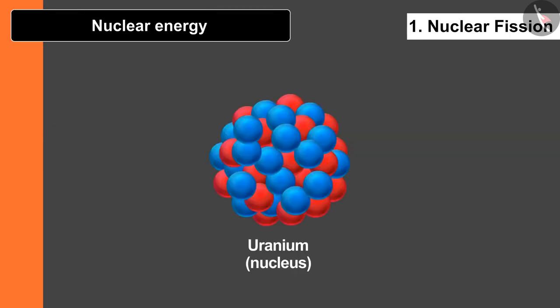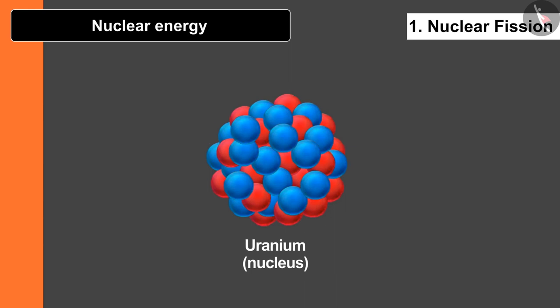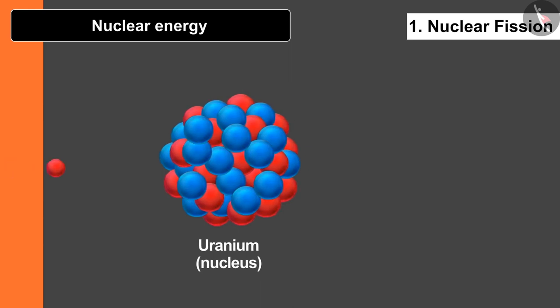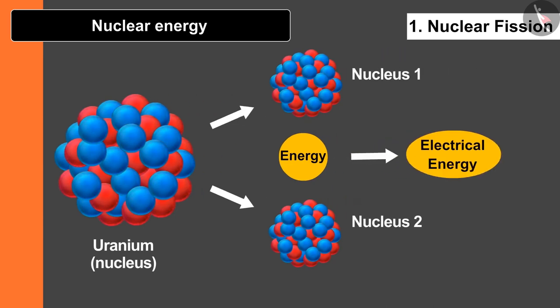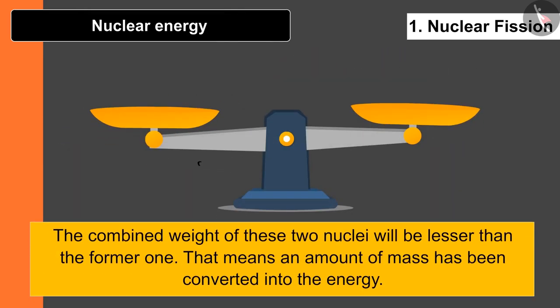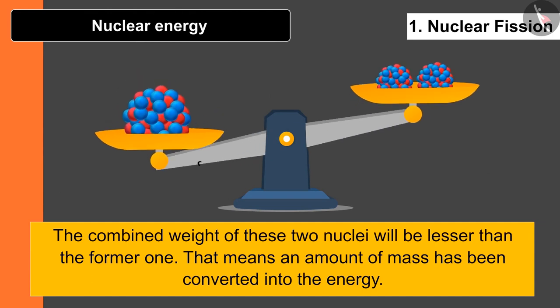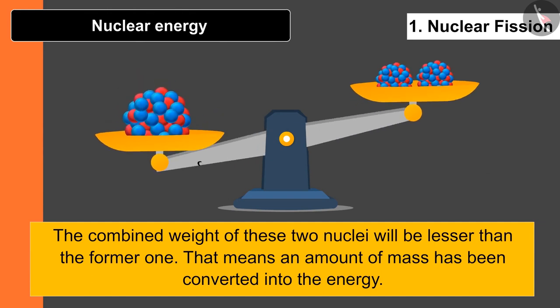In nuclear fission, if a heavier nucleus such as uranium is taken, the unstable nucleus of uranium will try to become stable. To stabilize it, a low-energy neutron is bombarded with it, resulting in two stable nuclei. In this process, a huge amount of energy is released which can be used to obtain electrical energy. The combined weight of the two resulting nuclei is less than the original, meaning an amount of mass has been converted into energy.